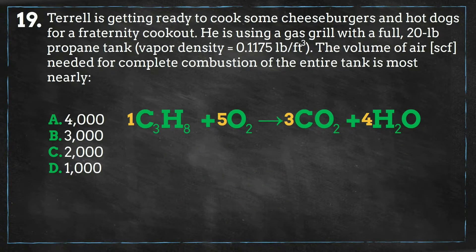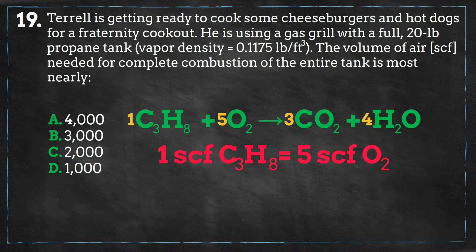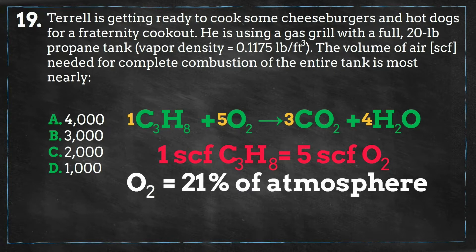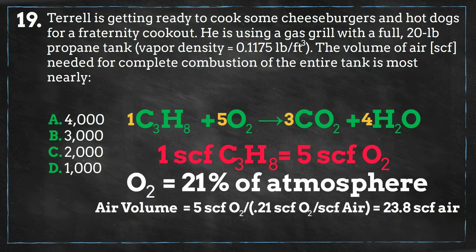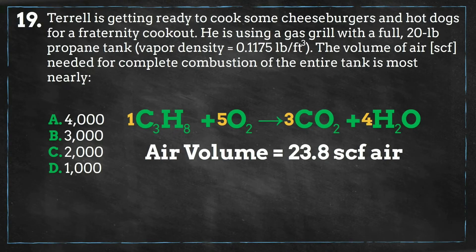Now that we have our coefficients for our equation, we see that 1 mole of propane needs 5 moles of oxygen to be combusted. Since moles are based on volume, we can say that 1 standard cubic foot of propane requires 5 standard cubic feet of oxygen. Since oxygen only composes about 21% of the atmosphere, we can calculate that 23.8 standard cubic feet of air are needed per standard cubic foot of propane.